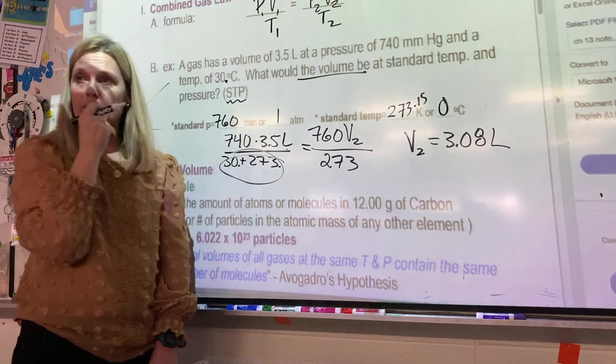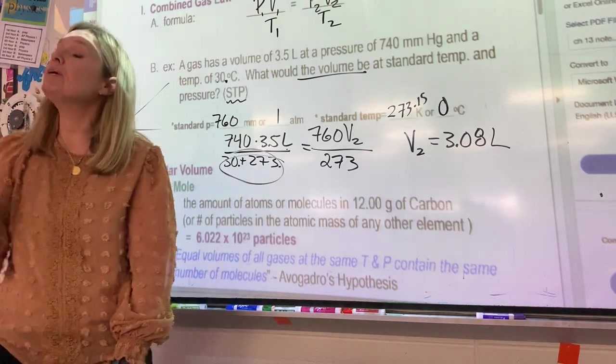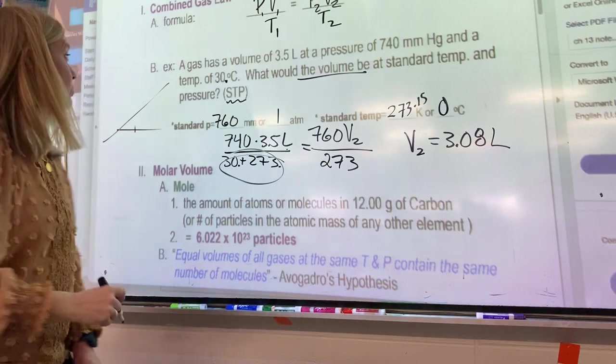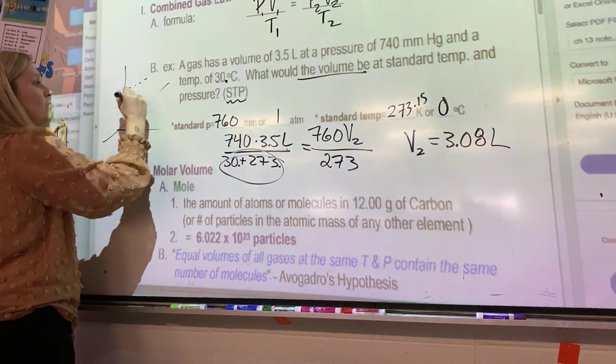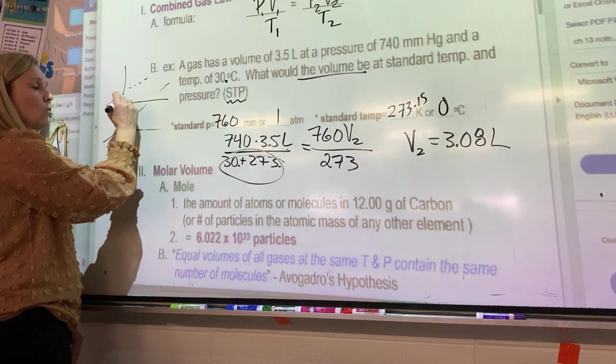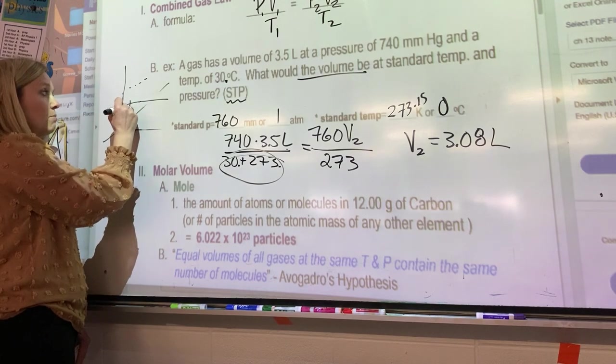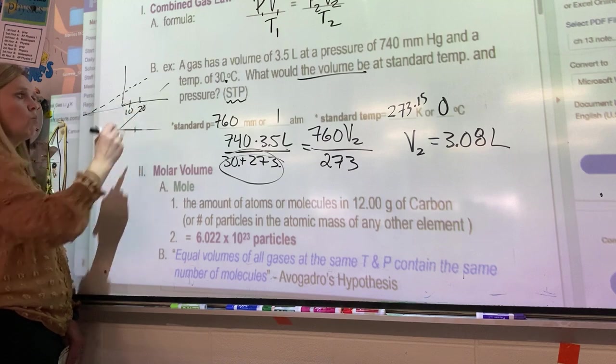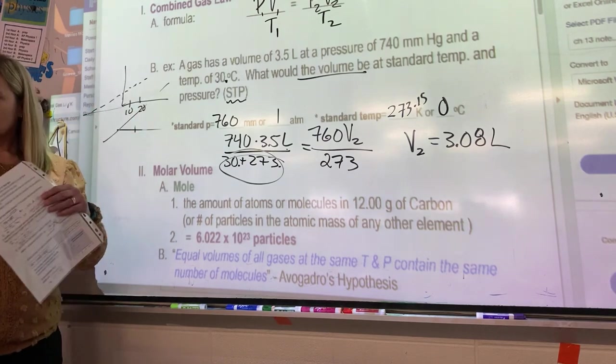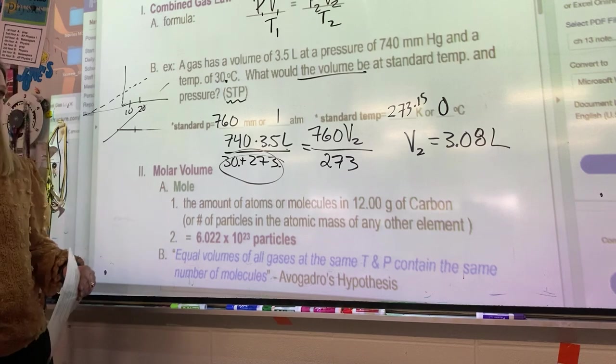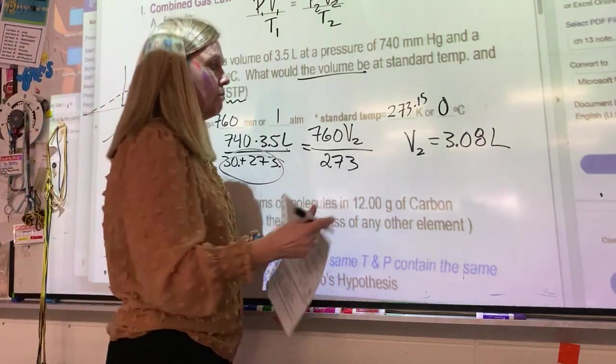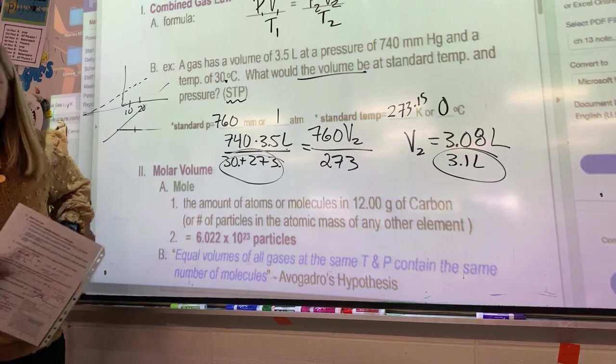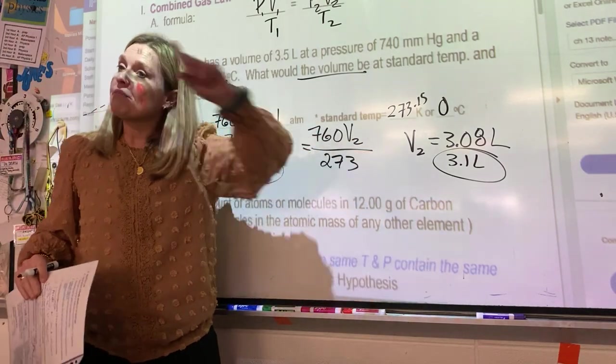On the other side, 760. What are we looking for? Volume at standard temperature, which is 273. Now it's just math. Plug in, do this, times by this, divide by this. You could do it one time. Even I would do this in one step in your calculator. And I'm going to get 3.08 liters.